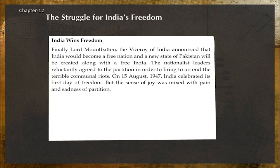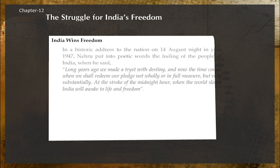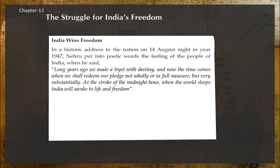India wins freedom: Lord Mountbatten, the Viceroy of India, announced that India would become a free nation and a new state of Pakistan would be created. The nationalist leaders reluctantly agreed to partition in order to end the terrible communal riots. On 15 August 1947, India celebrated its first day of freedom, though the joy was mixed with the pain and sadness of partition. In his historic address on the night of 14 August 1947, Nehru said: 'Long years ago we made a tryst with destiny, and now the time comes when we shall redeem our pledge... at the stroke of the midnight hour, when the world sleeps, India will awake to life and freedom.'